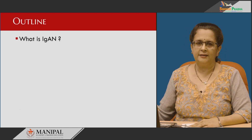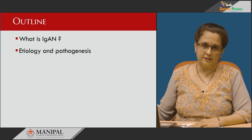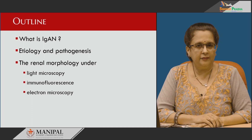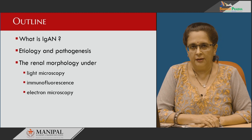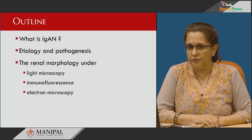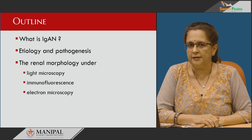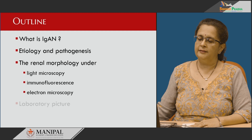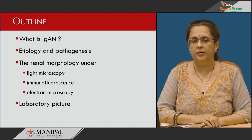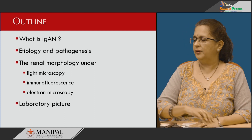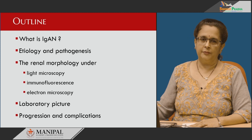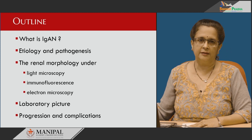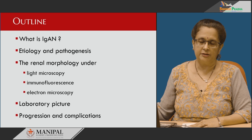What exactly is IgA nephropathy? We will study the etiology and pathogenesis of this disease. We will have a look at the renal morphology under light microscopy, immunofluorescence, as well as electron microscopy. Then we will see the clinical features including the laboratory diagnosis, progression, and complications associated with IgA nephropathy.